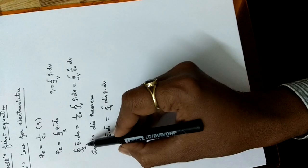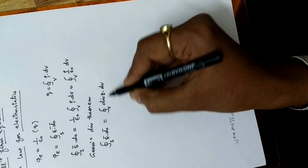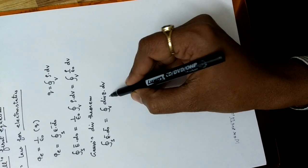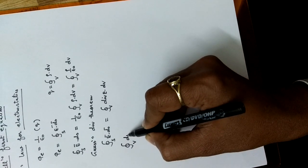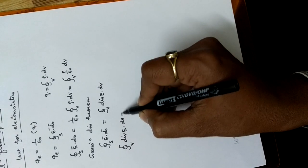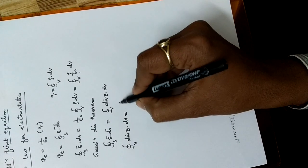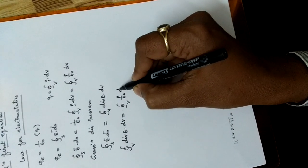Now we can replace this surface integration of electric field by volume integration of divergence of that electric field, and it becomes volume integration of divergence of electric field equal to volume integration of rho upon epsilon naught dv.